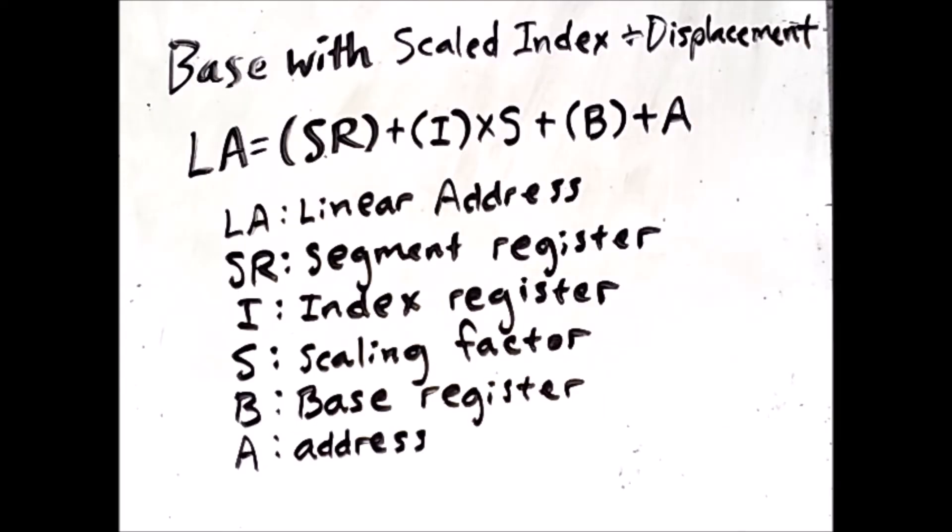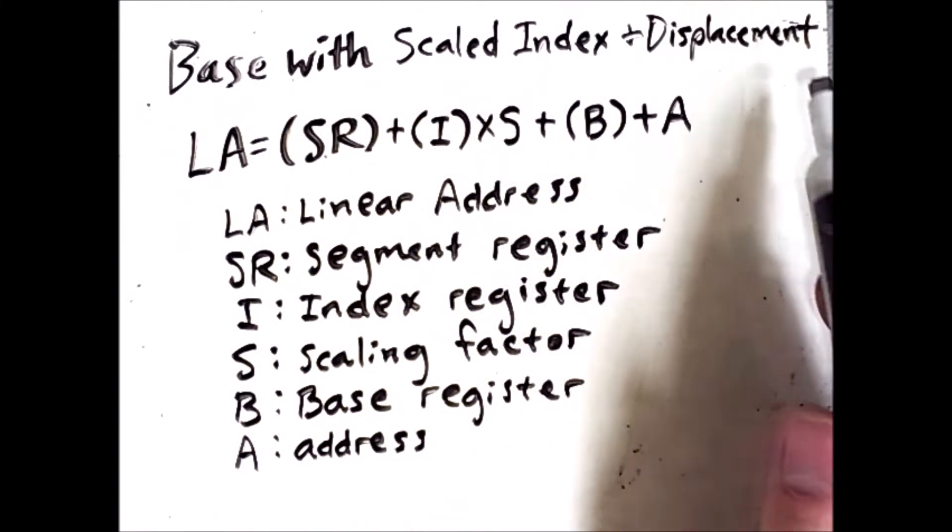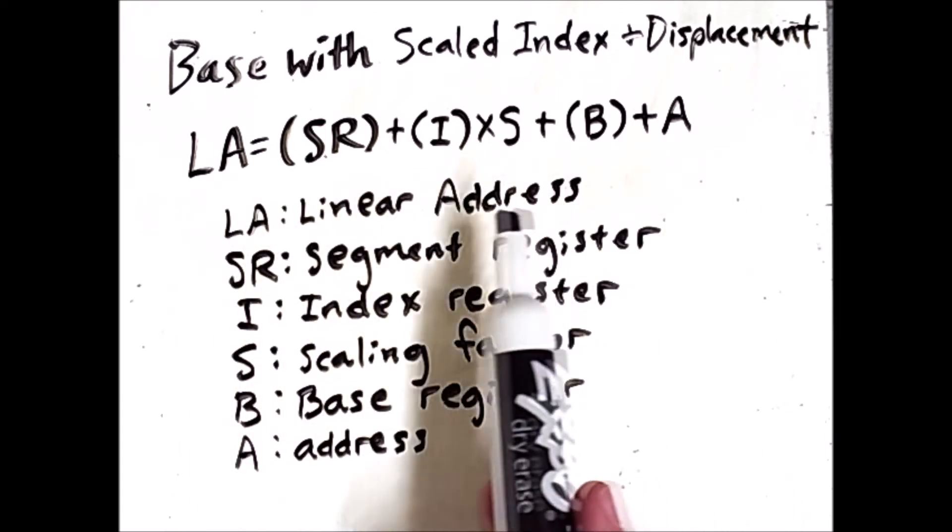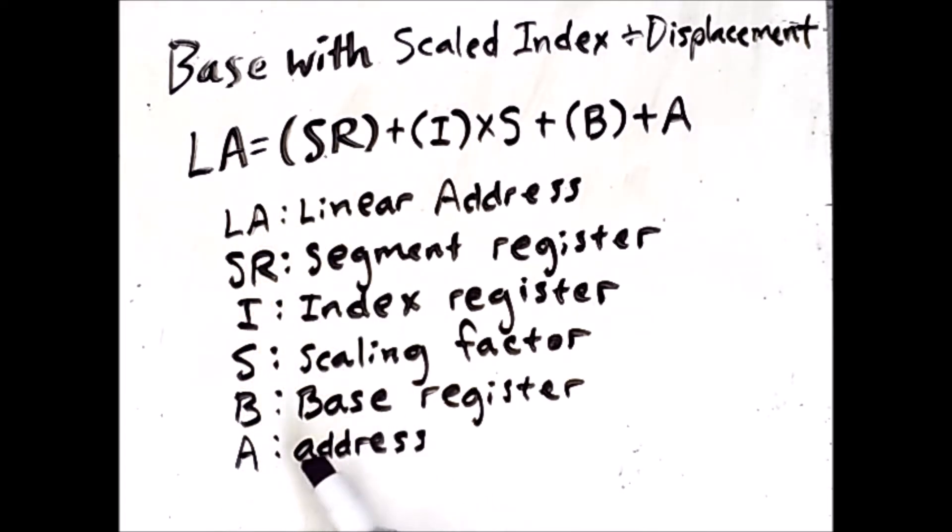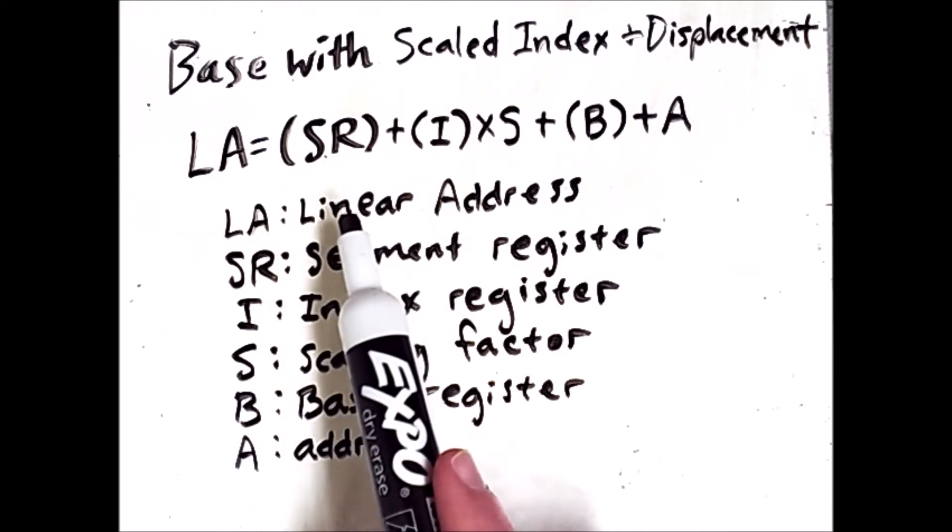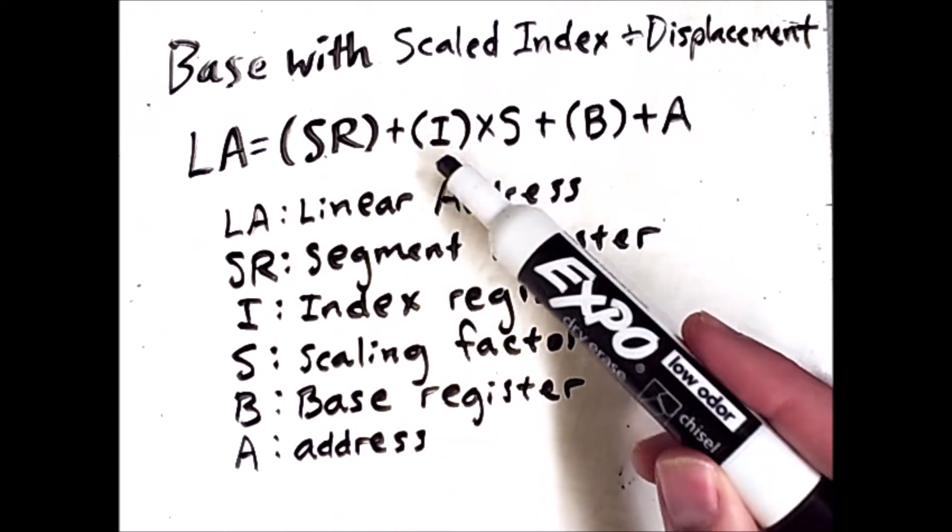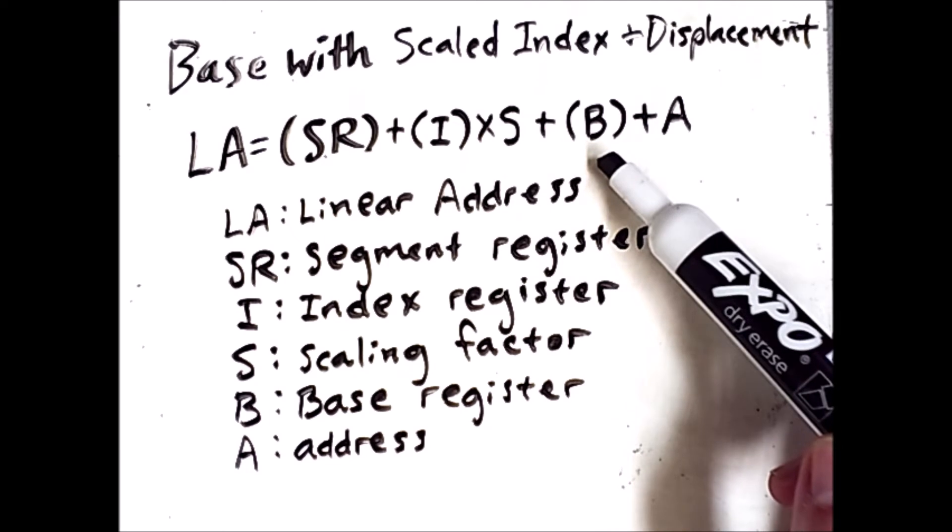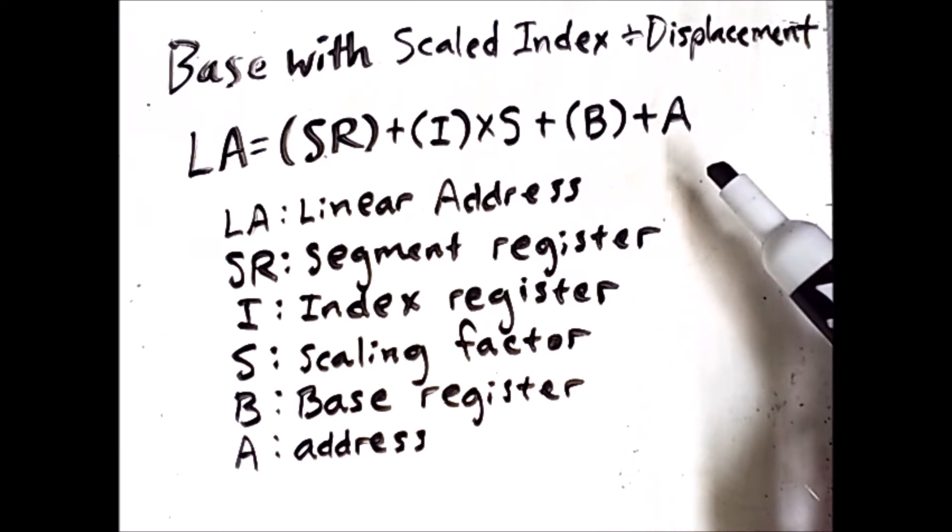When using the addressing mode of base with scaled index and displacement, we compute the linear address, the location of the data we're looking for, using all of these terms. Now, if we have parentheses around a register, it means we are accessing the contents of that register. So SR is an implicit segment register, as we just had with displacement a moment ago. But then we have some new things. So I is an index register, S is a scaling factor, B is a base register, and A is an address, which means this is a number that is directly included into the instruction. So what does all this mean, and how can we interpret this? The best way to make sense of this is with an actual x86 instruction.